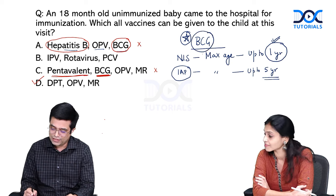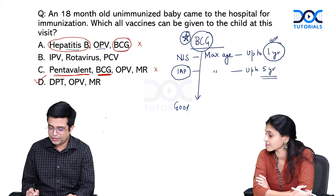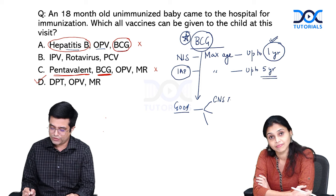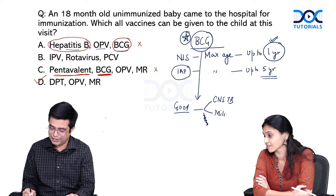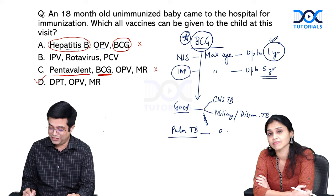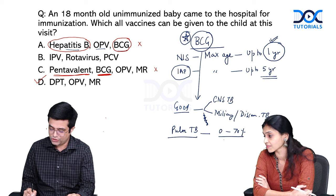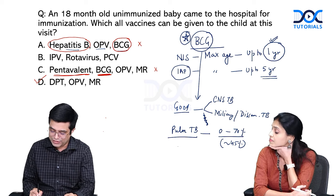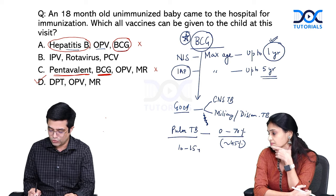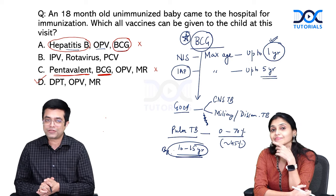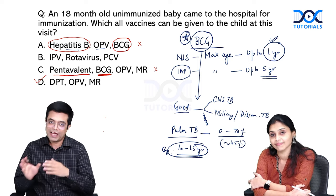BCG vaccine provides good protection against CNS tuberculosis and miliary or disseminated tuberculosis in children. However, its protection against pulmonary tuberculosis is doubtful - the protection rate varies from 0 to 70 percent with a mean of about 45 percent, which is not a good protection rate. Most of that pulmonary TB protection also tends to disappear by 10 to 15 years of age according to most standard textbooks.